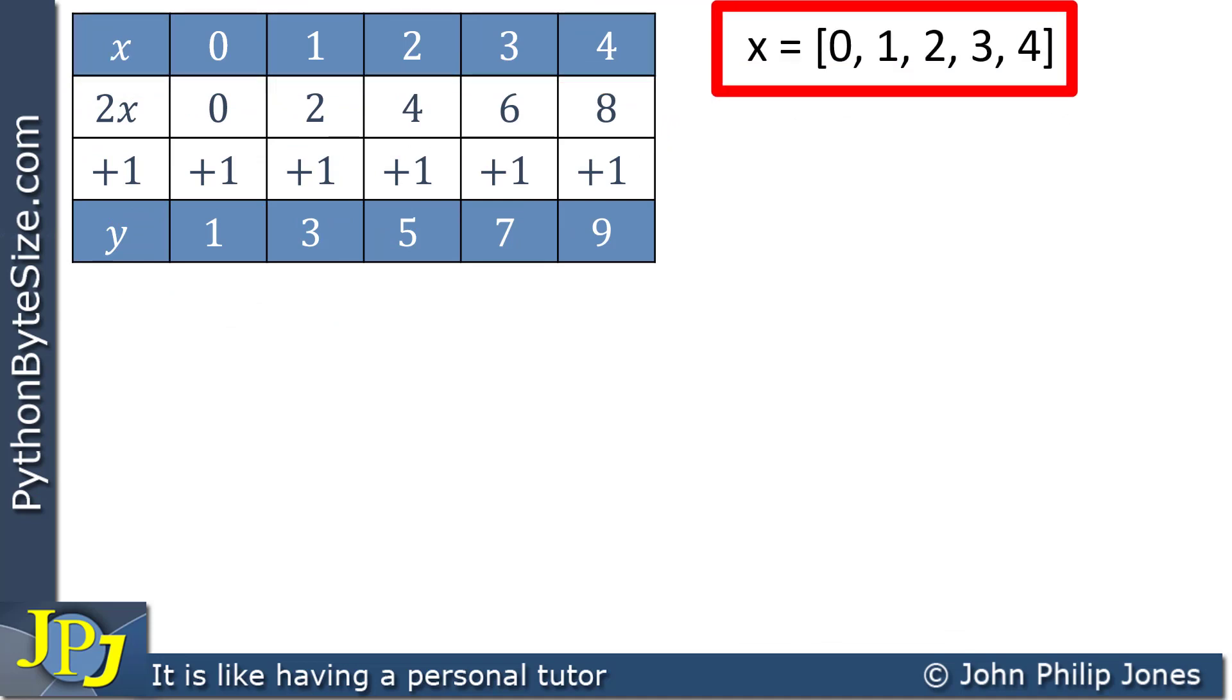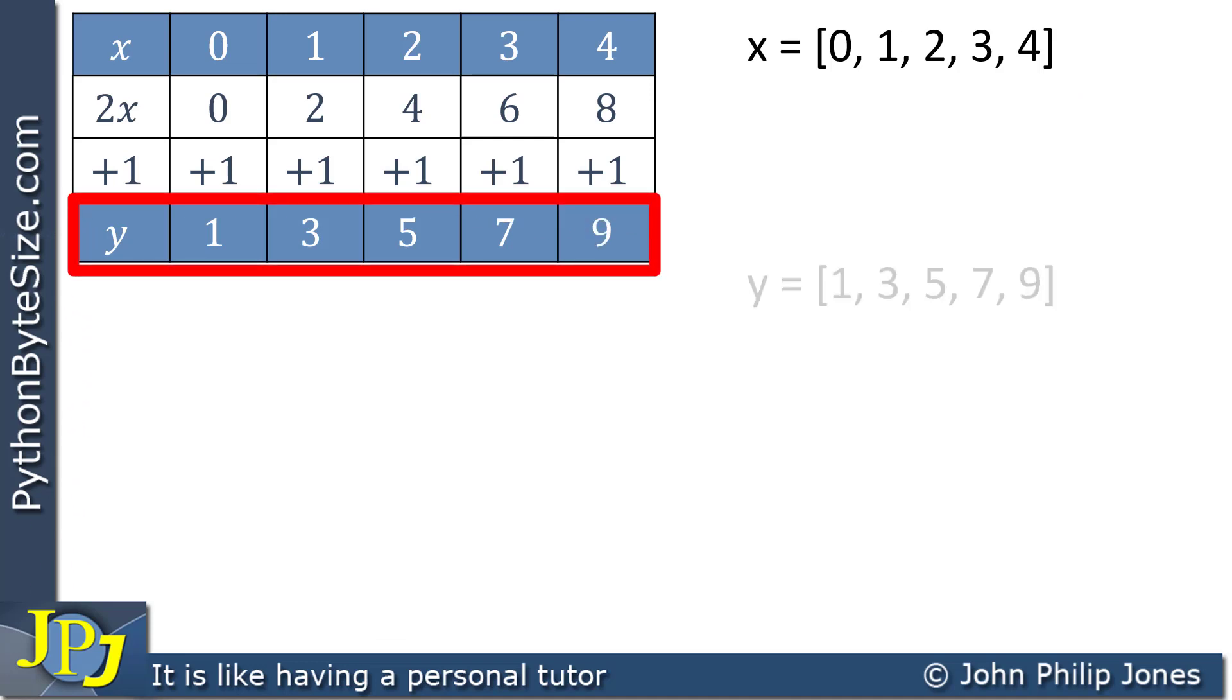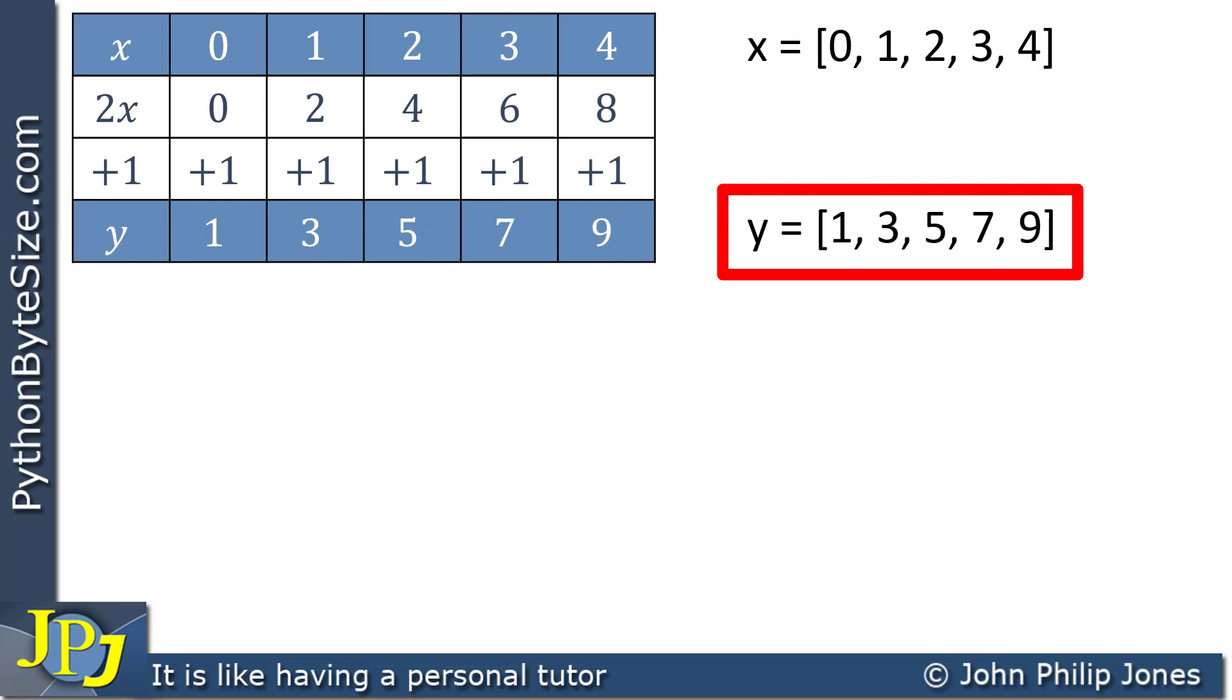So if I was going to represent x in Python with a list, you would do it as shown here. x is assigned, you can see I've used the square brackets and inside I've got 0, 1, 2, 3 and 4. If I was going to represent the y, I would also use that with a list as you can see here and I've put in the values of 1, 3, 5, 7 and 9.